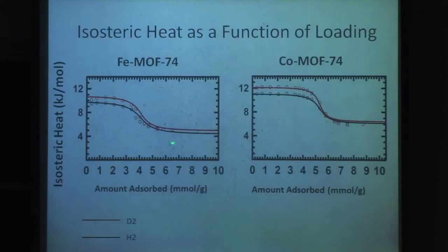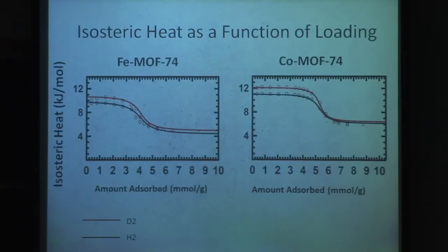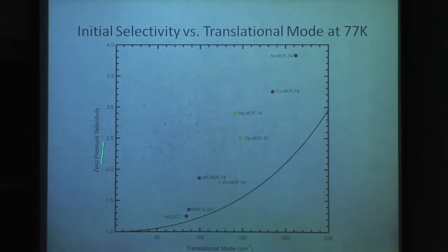So this is our plot of isosteric heat. I should note, the lines intersecting these points are from fitting to that Langmuir model. We computed the isosteric heat from the data you just saw, and this is for the iron-based MOF and cobalt-based MOF as a function of the amount adsorbed. You can see these are in kilojoules per mole. We're seeing a difference in zero-point energy of around a kilojoule per mole for these two materials.